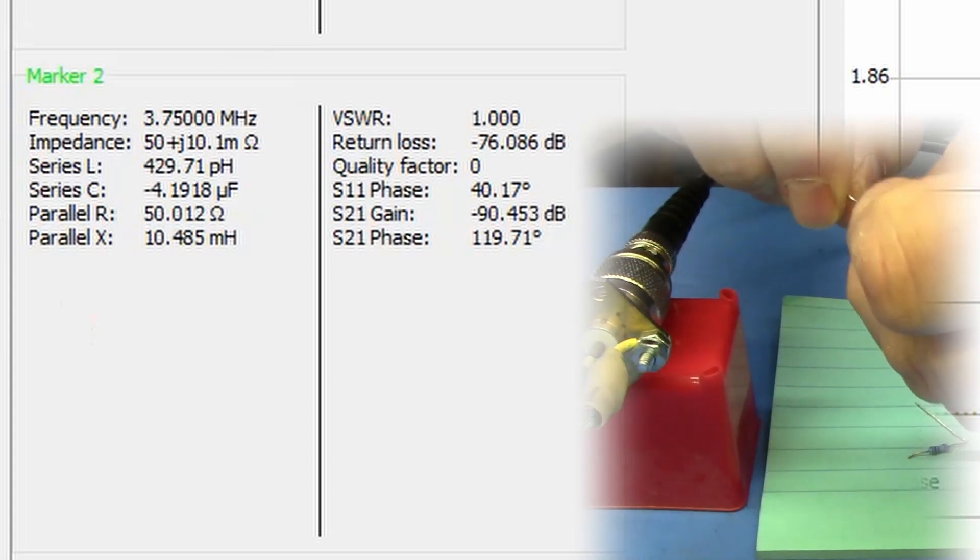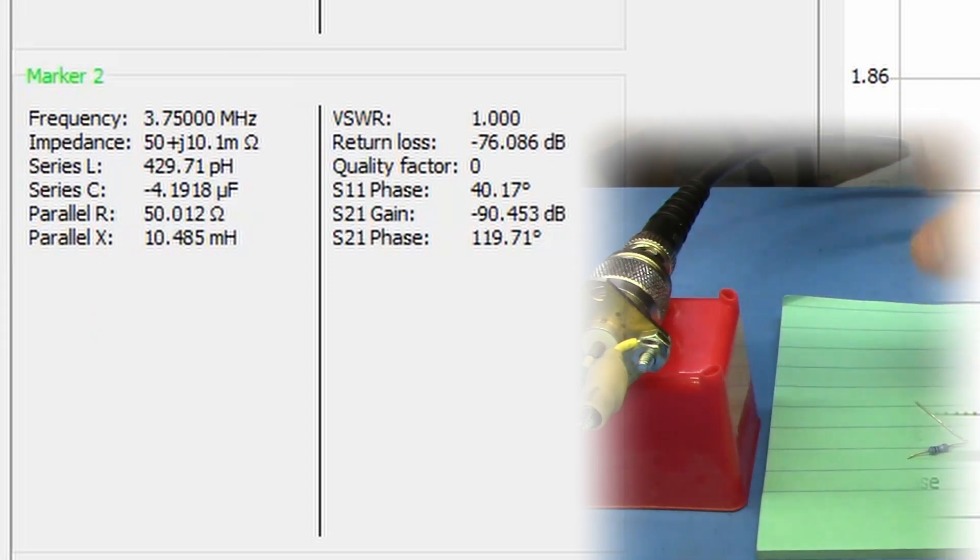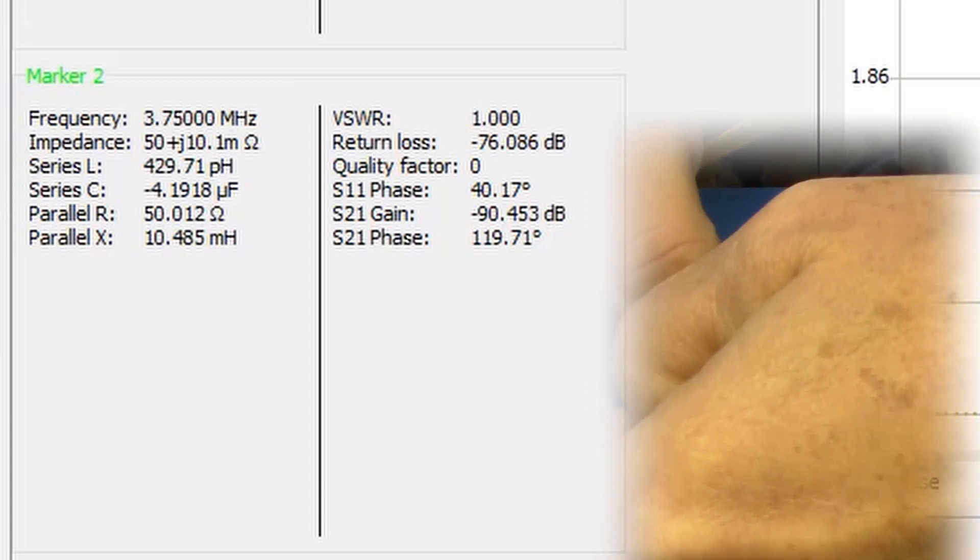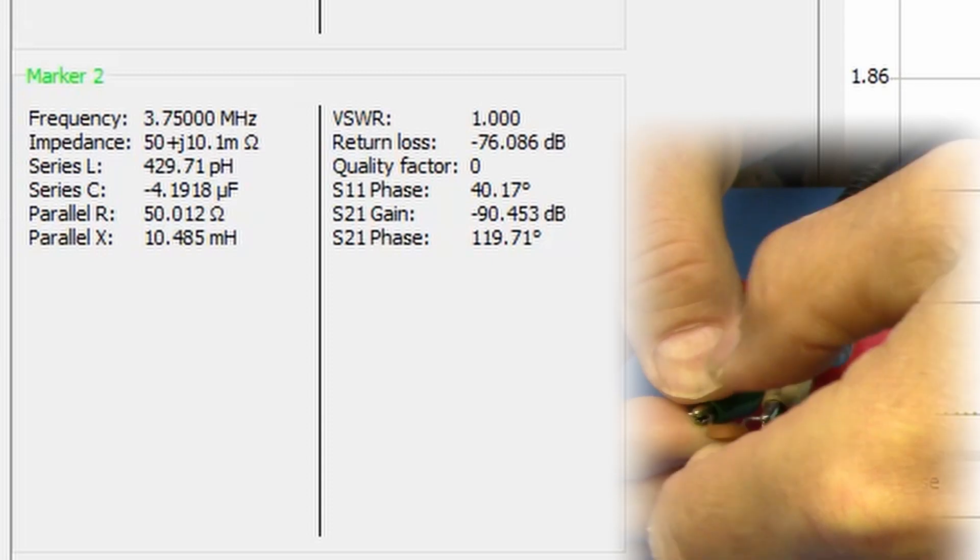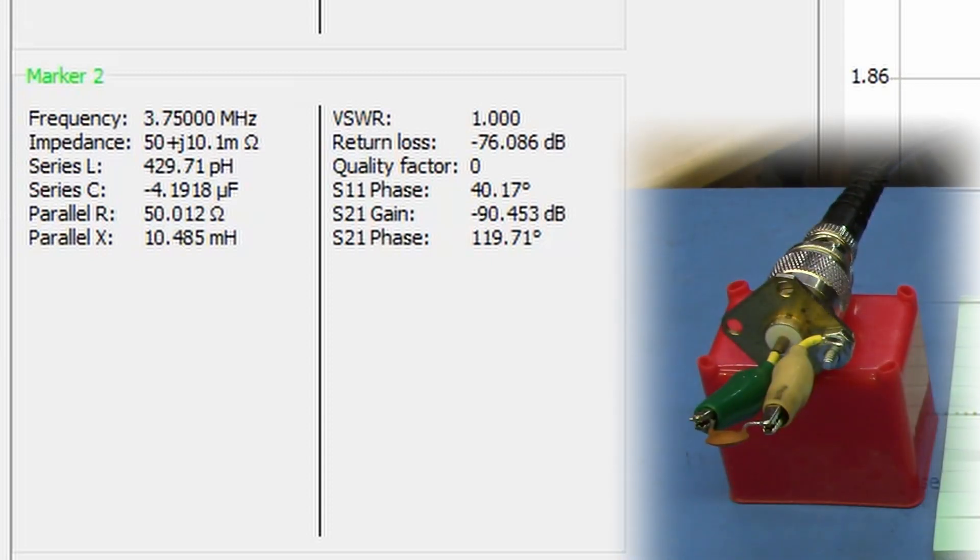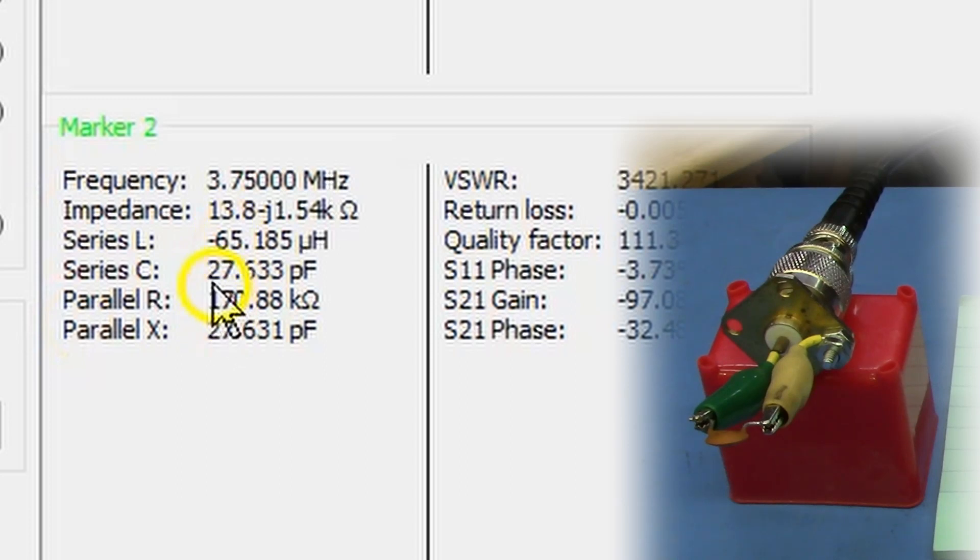So that looks good. But I am going to do a sanity check. I do a sanity check when I do this kind of stuff using this precision NPO disk ceramic capacitor. Its nominal value is 27 picofarads. So I will connect this up to my clip leads here. Make sure I have a good connection. Alright, now let's scan. And it says that it is 27.633 picofarads at 3.75. So that tells me that we are good to go.